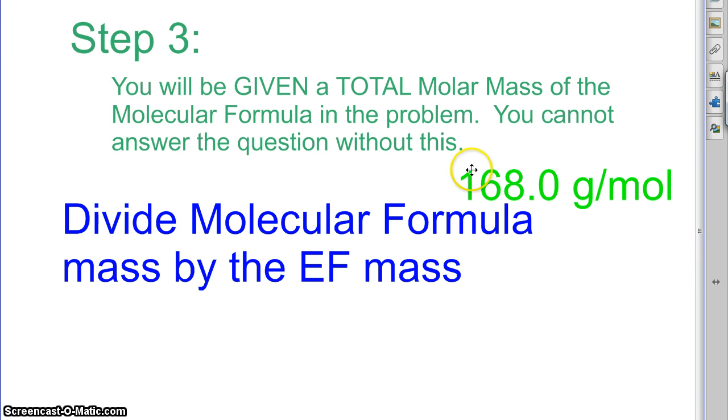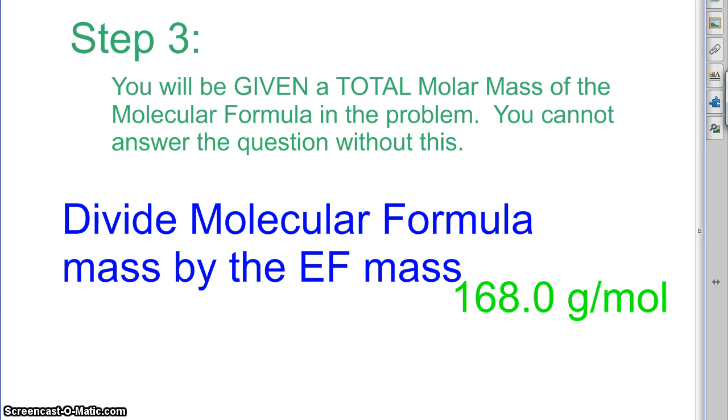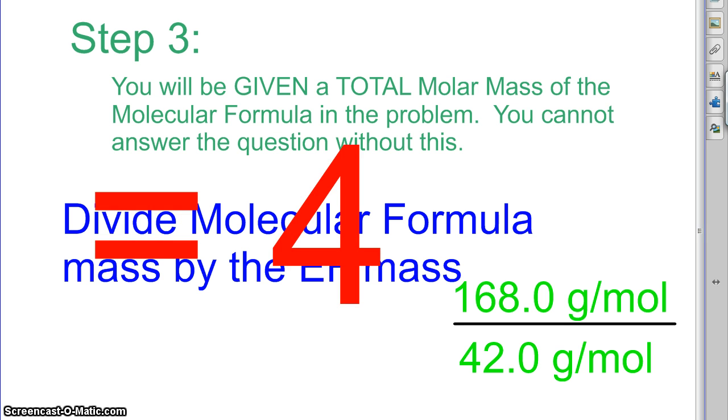But this multiple has to add up to 168 grams per mole. So the way we do that is we take that molar mass, the molecular formula mass, and we divide it by the empirical formula mass that we just calculated. So what does that look like? Well, we take the molecular formula mass there, divide it by the empirical formula mass, and you get 4.